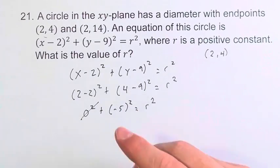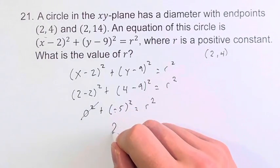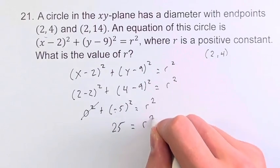0 squared is just 0 so we can ignore that. Negative 5 squared is positive 25, which is equal to r².